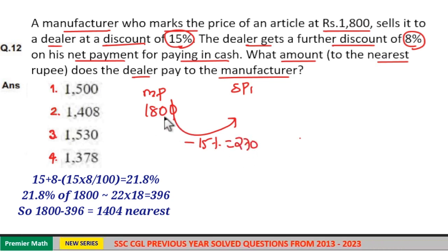So subtract 270 from 1800, which equals 1800 minus 300 equals 1500. So this is equal to 1530.